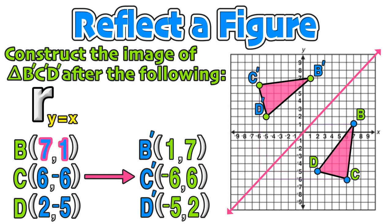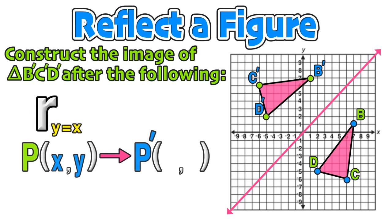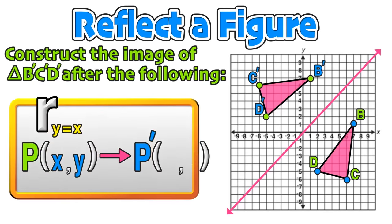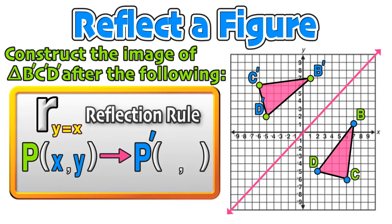Notice the coordinates: B at (7, 1) and B' at (1, 7); C at (6, negative 6) and C' at (negative 6, 6); D at (2, negative 5) and D' at (negative 5, 2). This relationship applies to any reflection over the line y equals x — when you have a point P with coordinates (x, y), the x and y coordinate values are switched. The y-coordinate value comes first and the x-coordinate value comes second; the signs do not change.